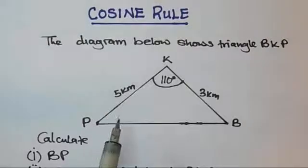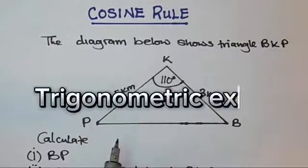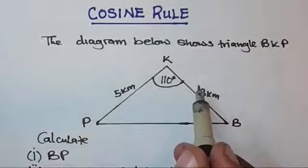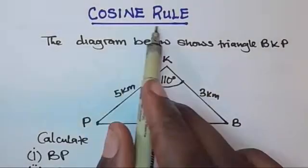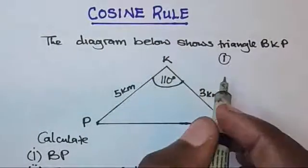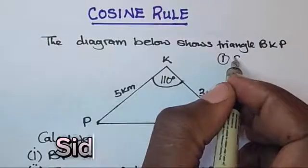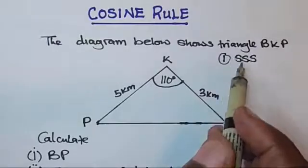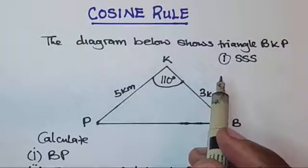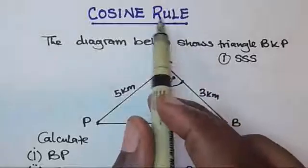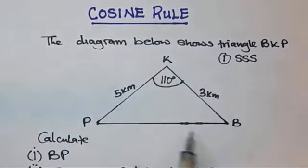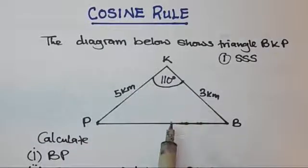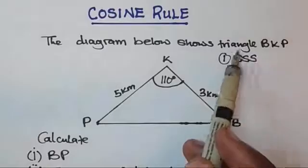In this video we're going to look at solving a trigonometric exam question using the cosine rule. Before we go ahead, you need to know how the cosine rule works. Number one: if you have been given side-side-side in a triangle — in other words, if you've been given all three sides — and you are asked to find one of the angles, then you are supposed to use the cosine rule.